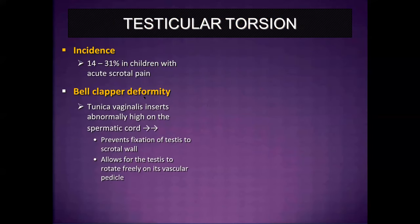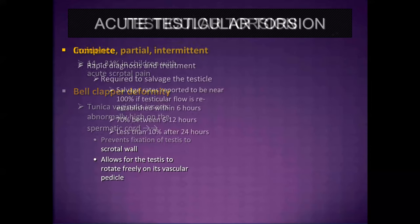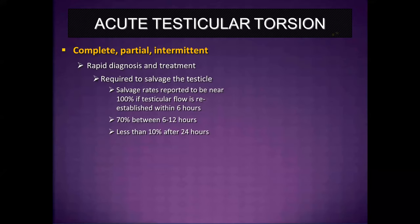Testicular torsion has an incidence of about 14 to 31% in children who present with acute scrotal pain. This is usually associated with the bell clapper deformity, a congenital abnormality where the tunica vaginalis inserts abnormally high on the spermatic cord, preventing fixation of the testes to the scrotal wall. This allows the testes to rotate freely on its vascular pedicle, potentially causing vascular occlusion. Salvage rates are near 100% if flow is reestablished within six hours, dropping to about 70% between six and 12 hours, and less than 10% after 24 hours.